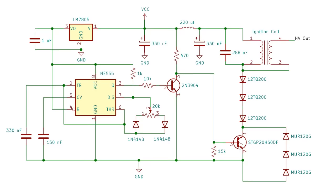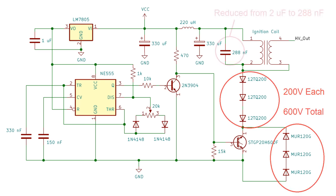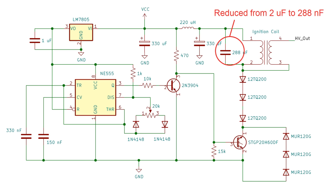I didn't have 600 volt diodes, so to get the blocking and over-voltage protection, I connected three in series of the same type used before, which were 200 volt diodes. I reduced the parallel capacitor down to 288 nanofarads.